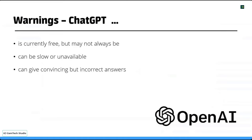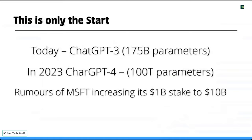This is only the start. Today what we're seeing is ChatGPT-3, released in November, which has something like 157 billion parameters in its model. They're talking about releasing ChatGPT-4 sometime this year, which is going to have around 100 trillion parameters — about 500 times the power. If you think about what you're seeing today and multiply it by 500, that is an interesting thought.